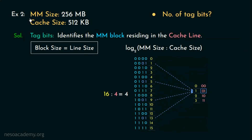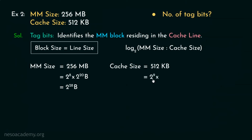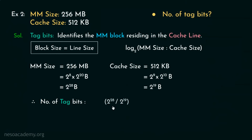The main memory size is 256MB — 256 is 2 to the power 8 and megabyte is 2 to the power 20 bytes — resulting in 2 to the power 28 bytes. The cache size is 512KB — 512 is 2 to the power 9 and kilobyte is 2 to the power 10 bytes — resulting in 2 to the power 19 bytes. Therefore the number of tag bits is log base 2 of (2 to the power 28 divided by 2 to the power 19), which results in 9 bits.